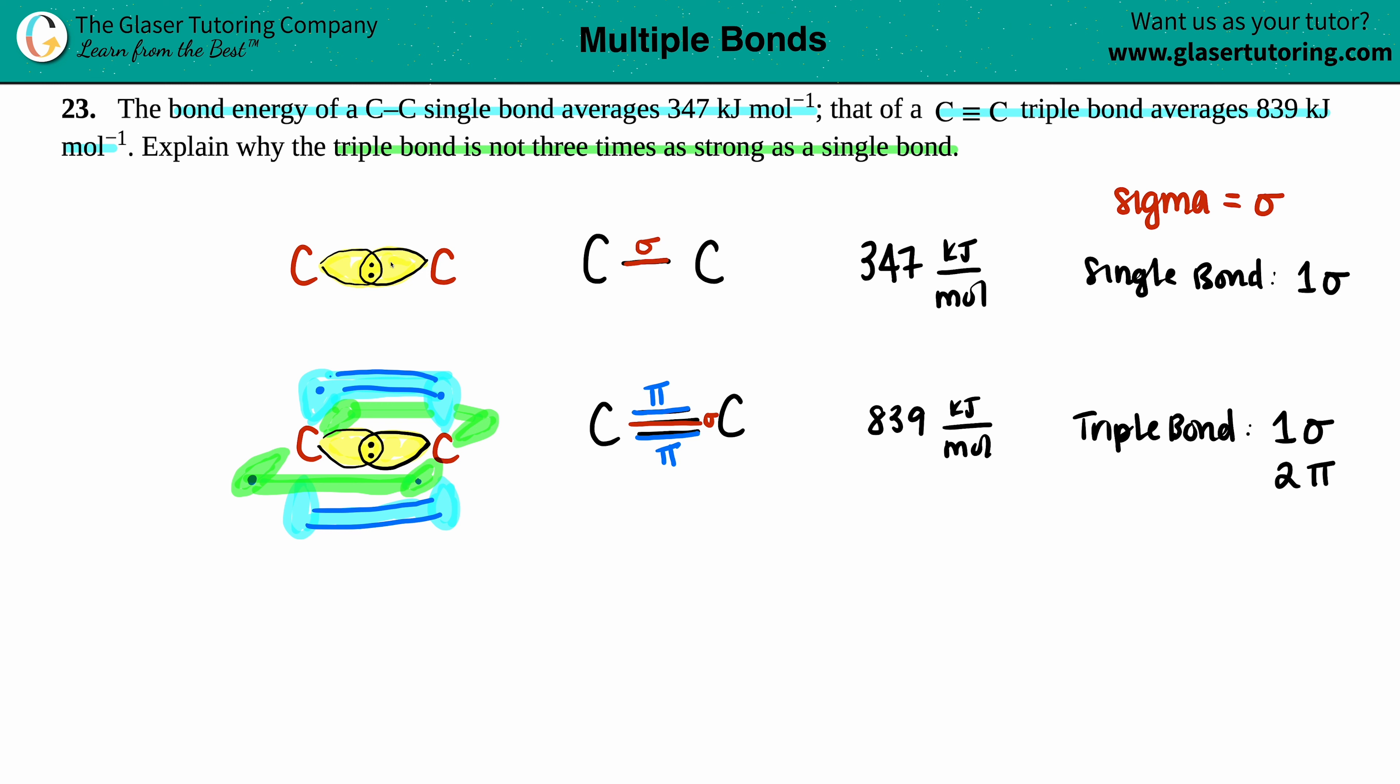And that's basically what it comes down to. Explain why the triple bond is not three times more strong as a single bond. It's because you do not have three sigma bonds. A triple bond has one sigma and two pi bonds. So those pi bonds are, you know, not as strong as the sigma bonds. And that's why this value is less than three times the amount here.